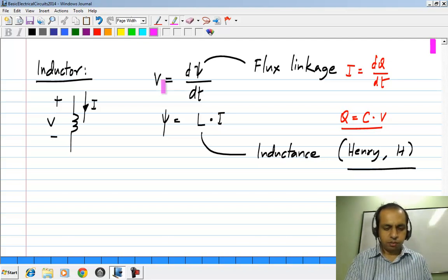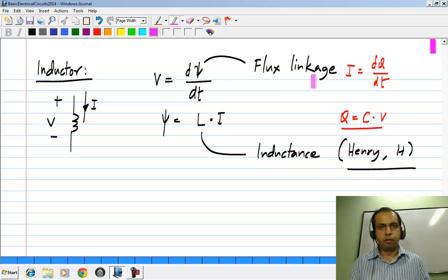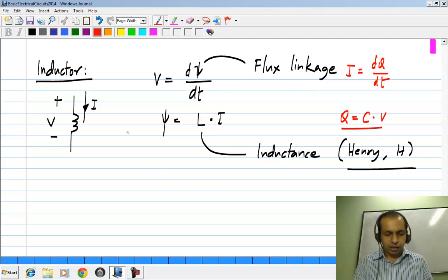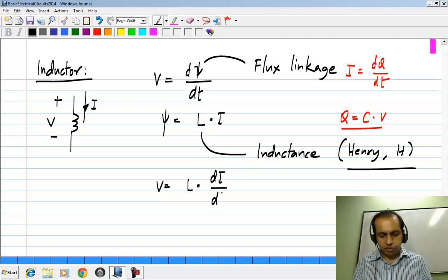That is the relationship between V and I, and for that we can eliminate this flux linkage and get a relationship which is V is L the inductance times the rate of change of current.